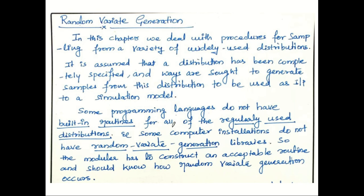Let us first understand the need for random variate generation. Some computer programming languages do not have built-in routines for all of the regularly used distributions. We have routines for generating random numbers, but not for all regularly used distributions. Also, some computer installations do not have random variate generation libraries, so the modeler has to construct an acceptable routine and should know how random variate generation occurs.